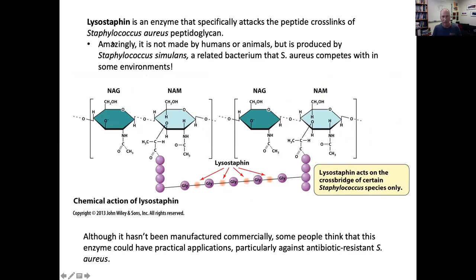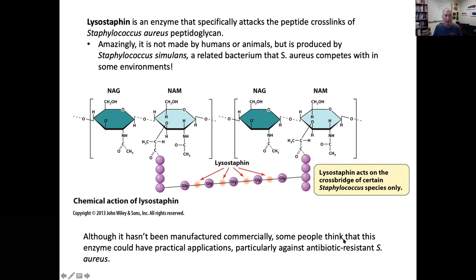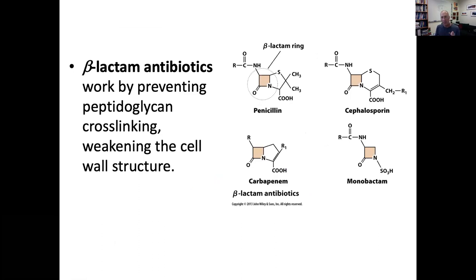Another specialized enzyme is lysostaphin. The 'lyso' part comes from lysing bacterial cells. Lysostaphin doesn't cut the backbone — it actually cuts the crosslink. It is an enzyme made by one Staphylococcus species, Staphylococcus simulans, to attack Staph aureus, with which it competes in the same environment. Since Staph aureus is a significant pathogen, lysostaphin may be helpful against antibiotic-resistant Staph aureus.